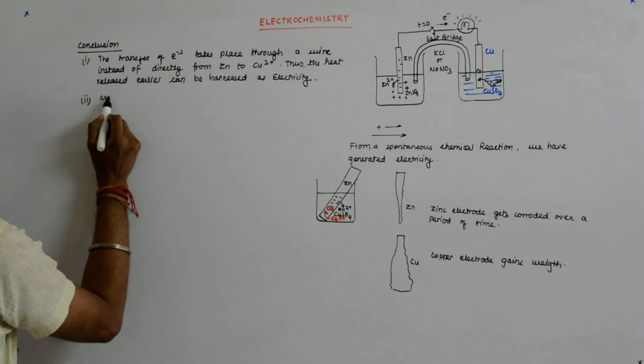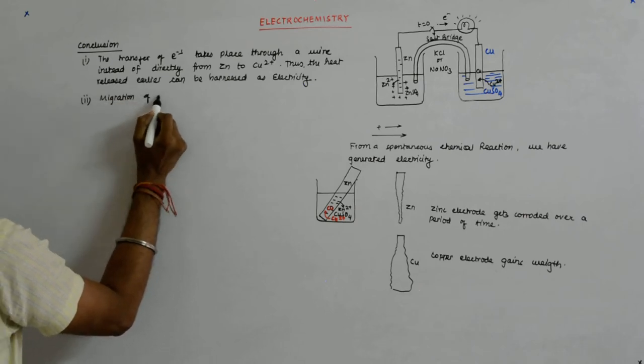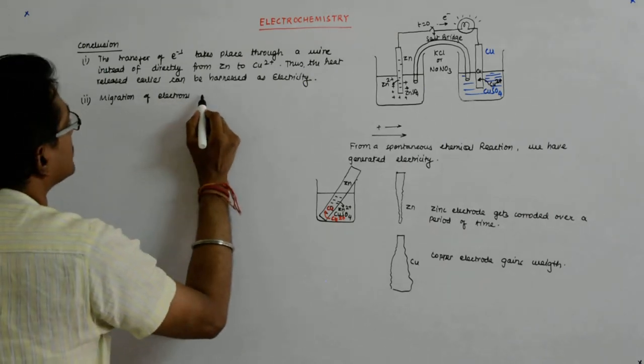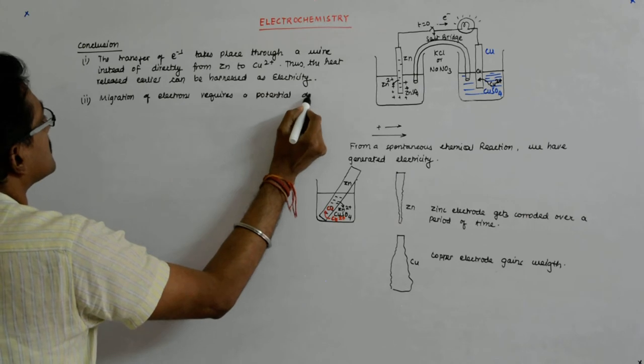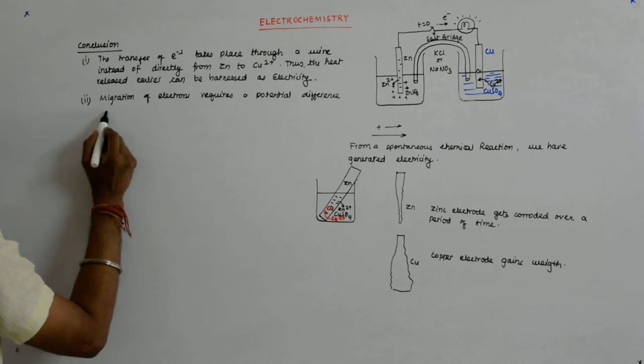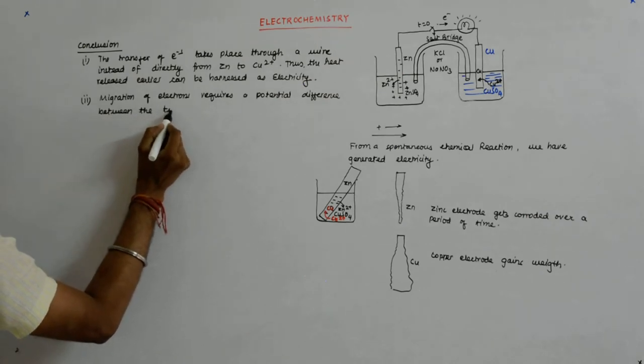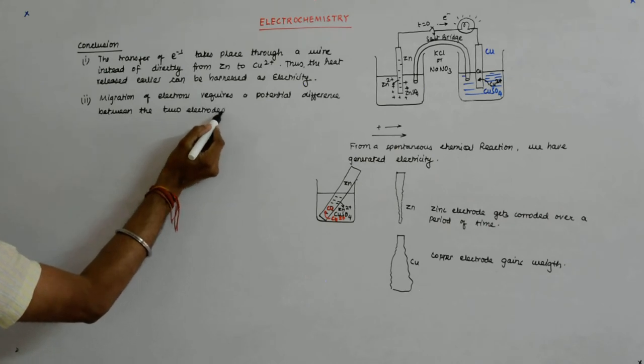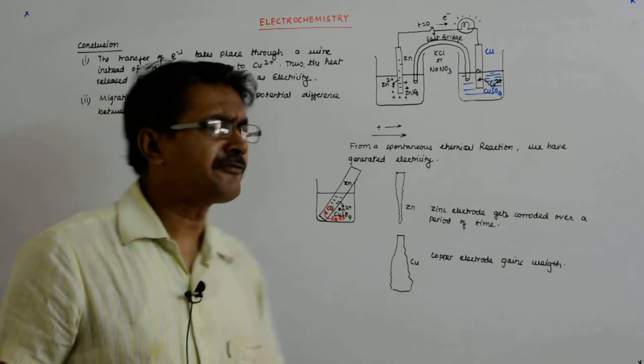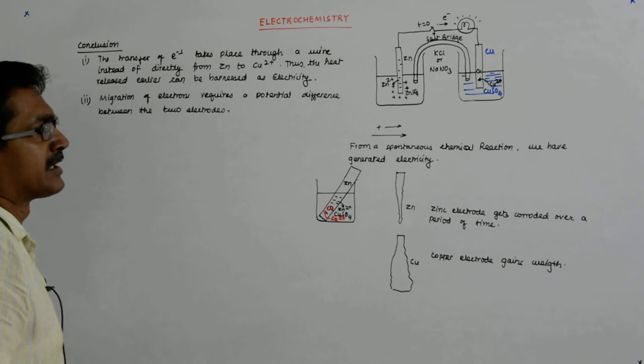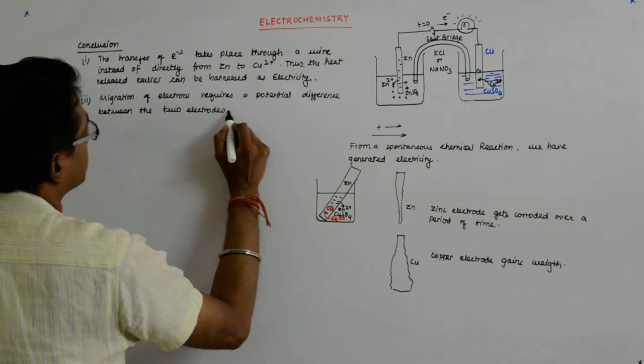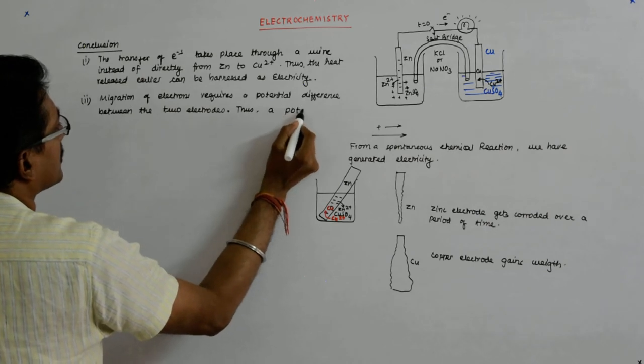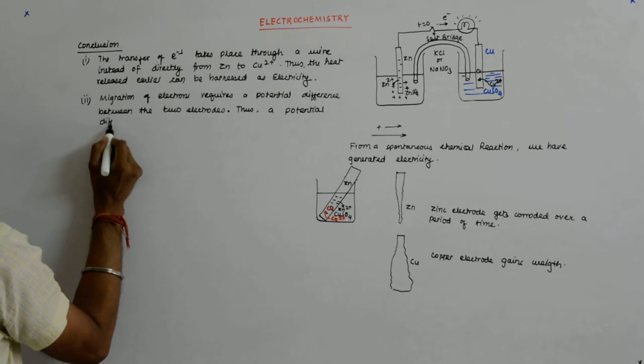Now, the migration of electrons requires a potential difference between the two electrons. If there is a migration from here to there, then it means there is a potential difference between them, as it happens in case of a battery. Thus, a potential difference should exist between the two electrons.